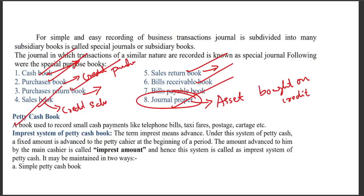The petty cash book records small payments such as telephone bill, taxi fare, postage, and cartage. The imprest system means a fixed impressed amount is given to the petty cashier, which is reimbursed periodically to maintain the imprest amount.